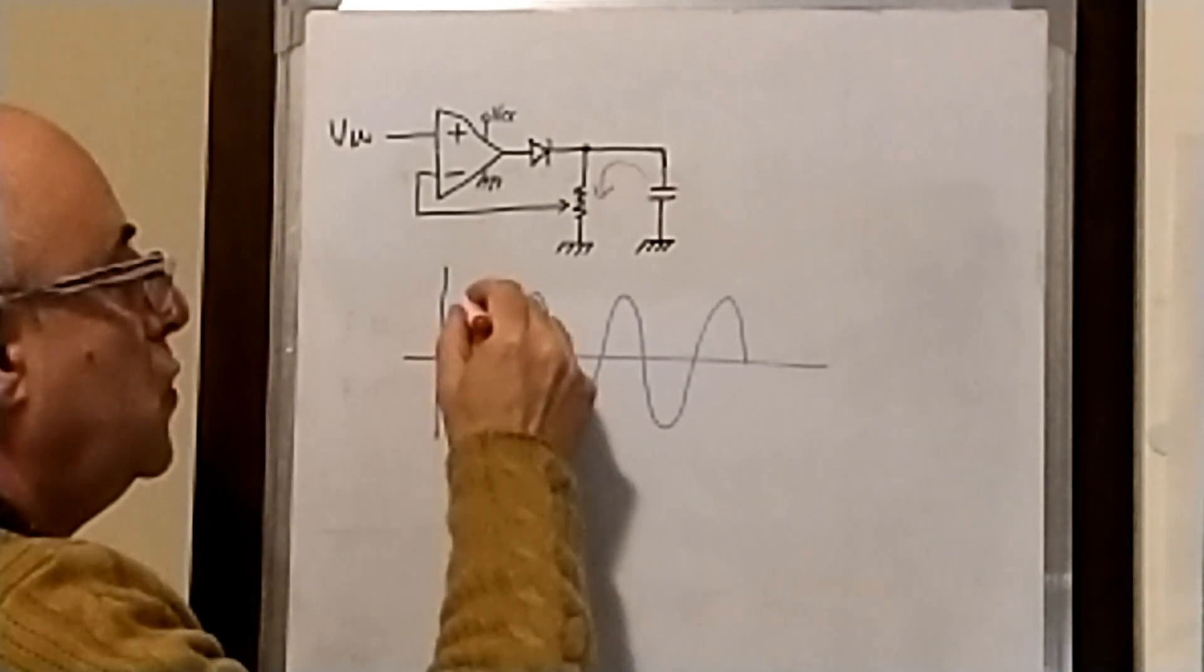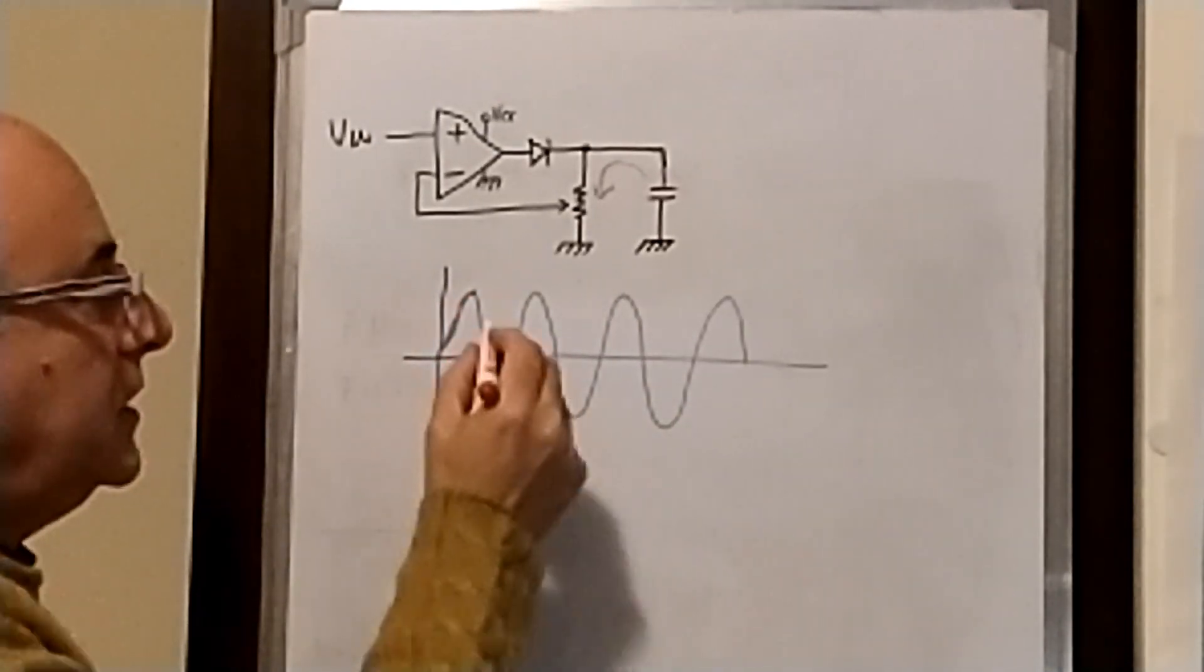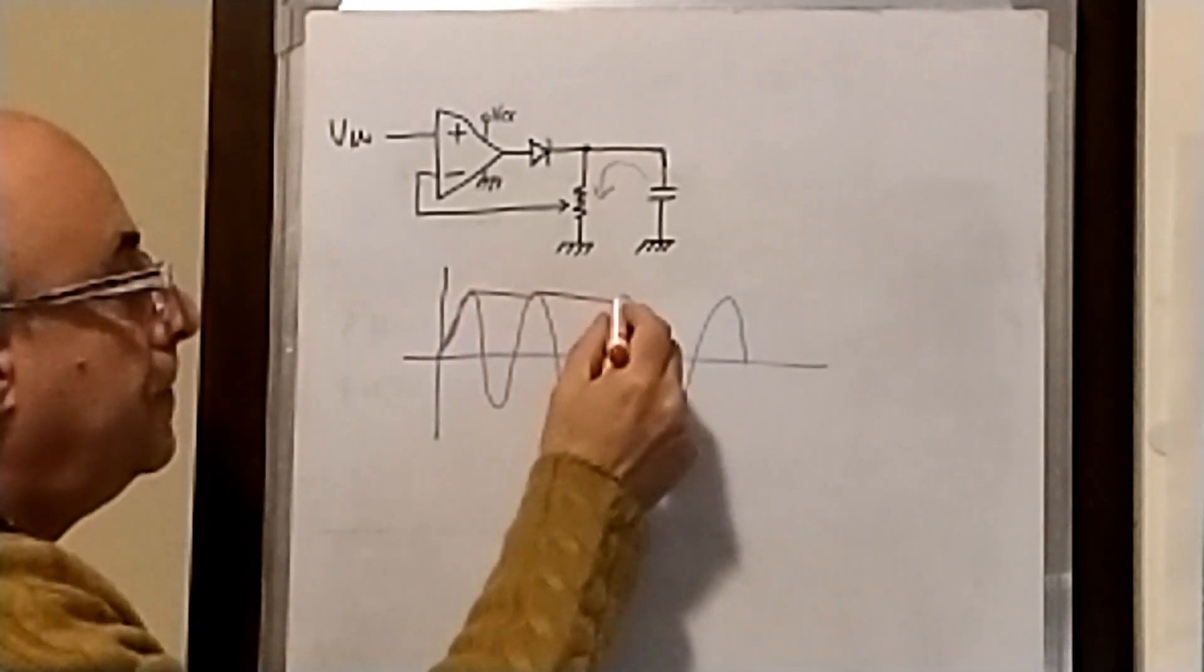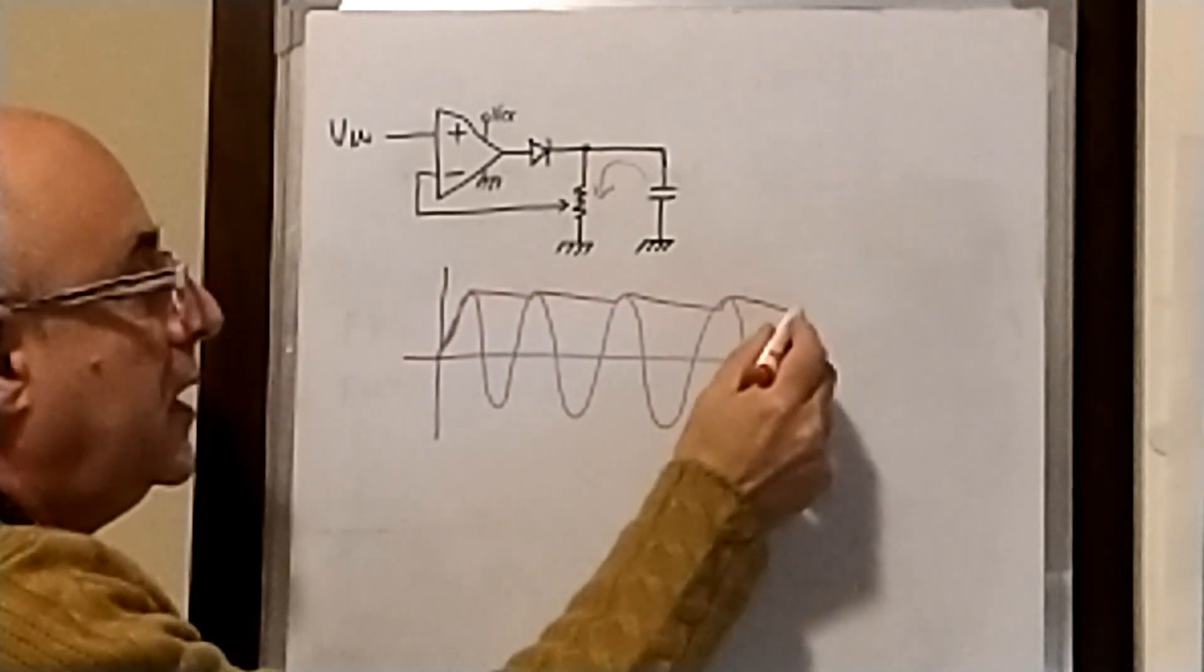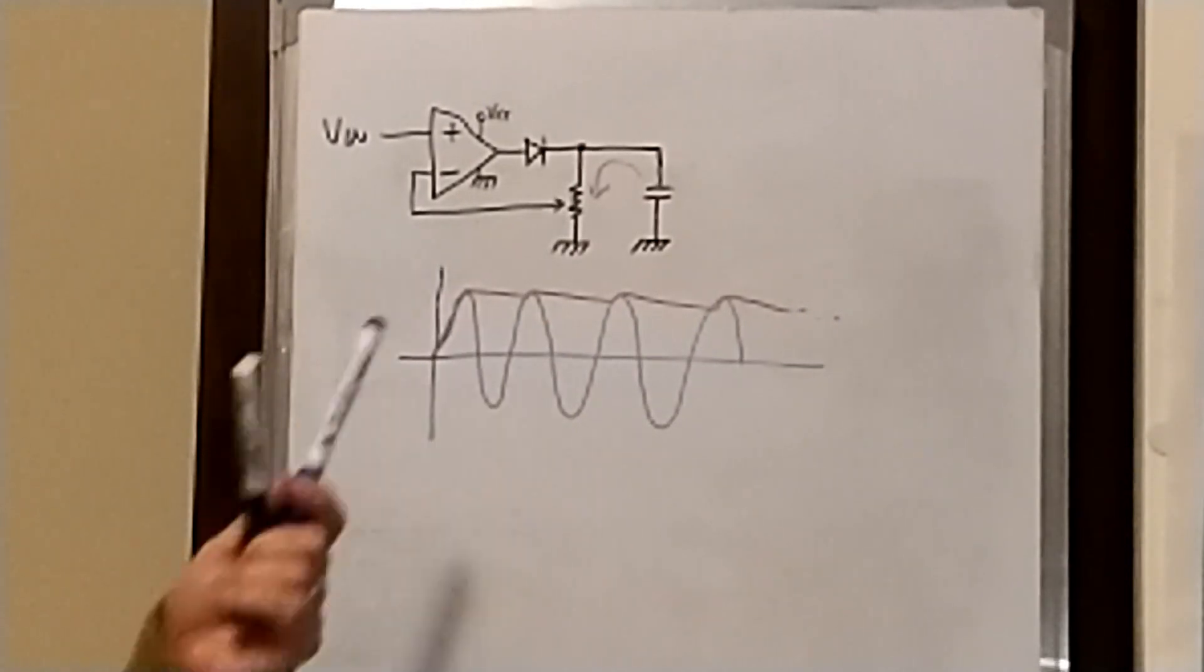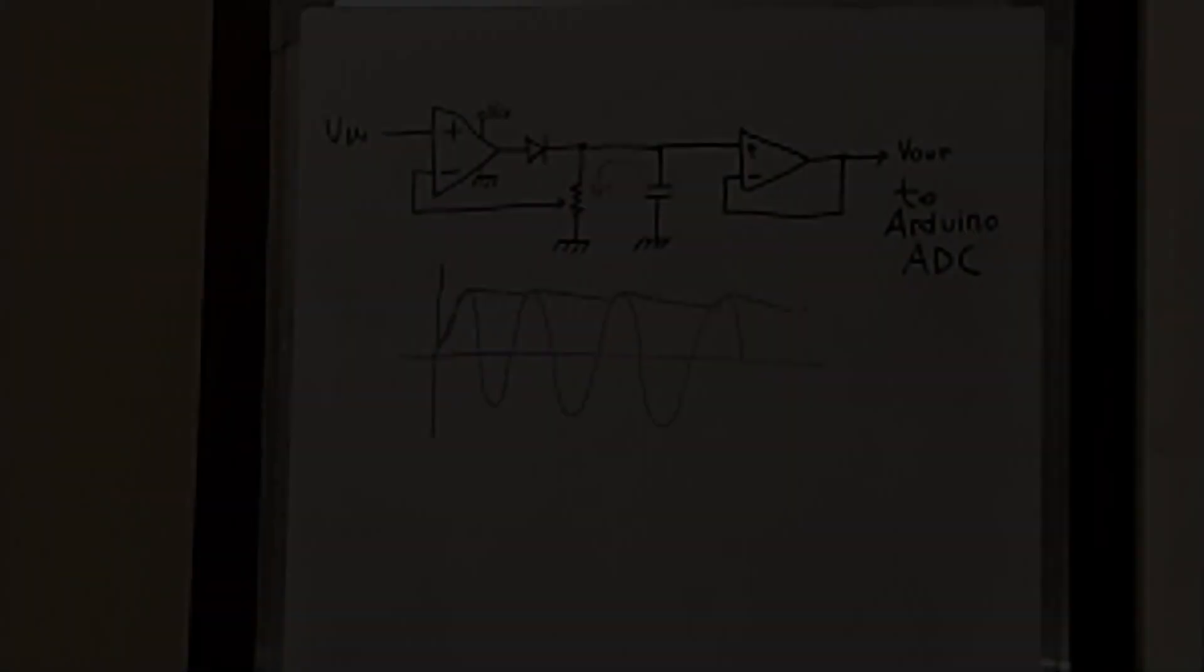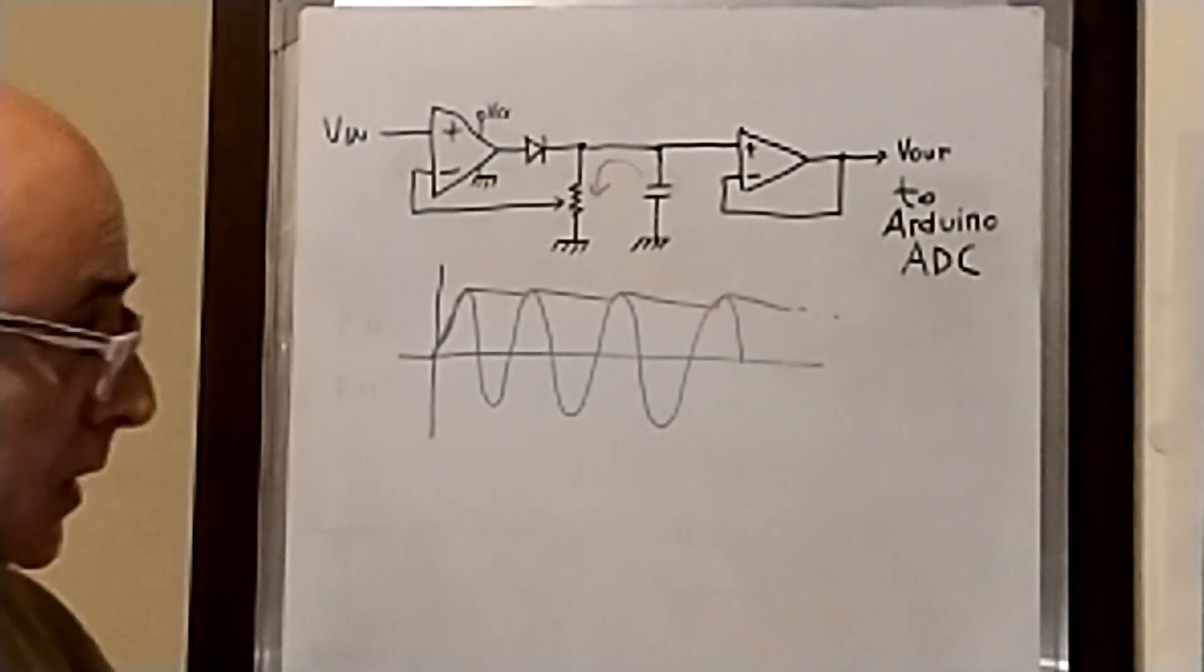In this case, we will follow the voltage and we will have something like that. Here after, a voltage amplitude follower, a peak detector.